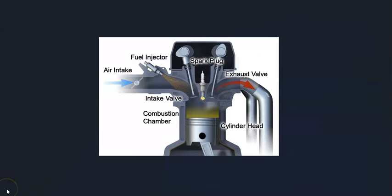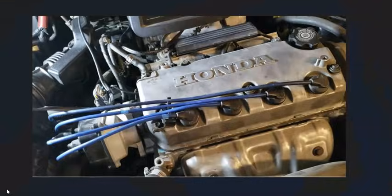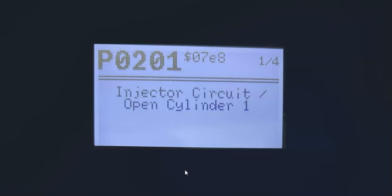This P0300 code can be kind of hard to troubleshoot since it could be caused by so many different things. Also, if you're getting any other codes, be sure to pay attention to those because they can help point you to what the problem is. For example, if you're getting a fuel injector code on a certain cylinder or another misfire code on certain cylinders, pay attention to that because it can help narrow things down.